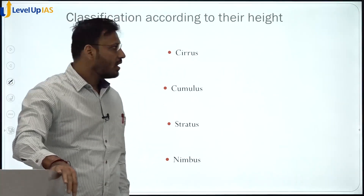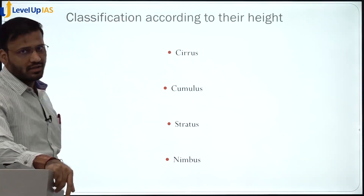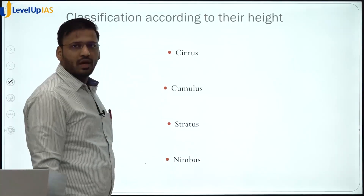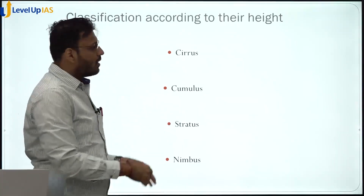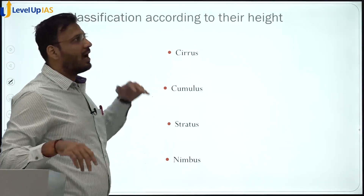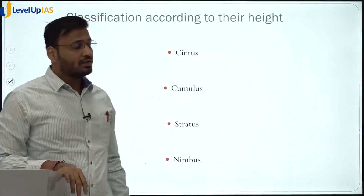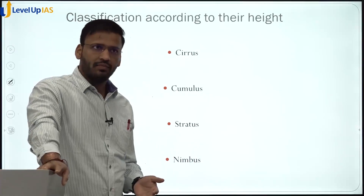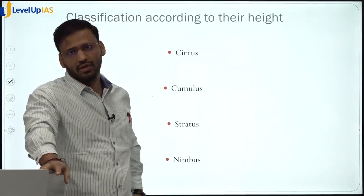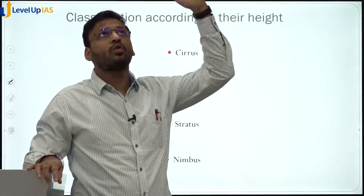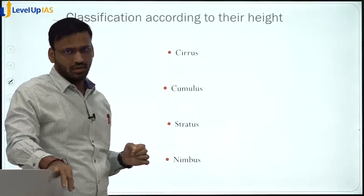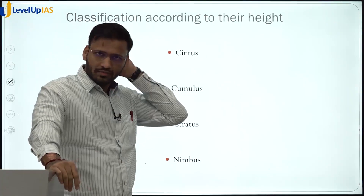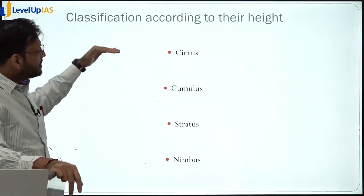Classifying them by height: closest to the ground is the nimbus cloud, above that is the stratus cloud, above stratus is the cumulus cloud, and the highest clouds are the cirrus clouds. Cirrus clouds are so high that sometimes when you are traveling by aeroplane, from the window you can see clouds above the aeroplane. Generally at a certain height there are no clouds, but sometimes you can see a little bit — cirrus clouds can go a little higher than the troposphere.